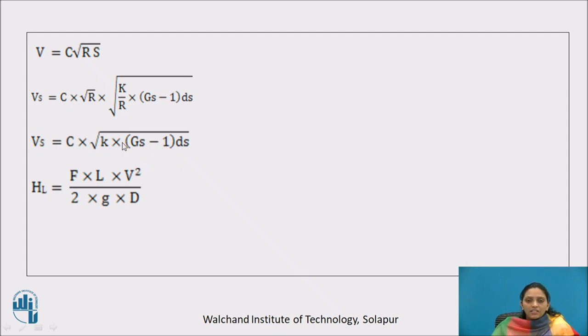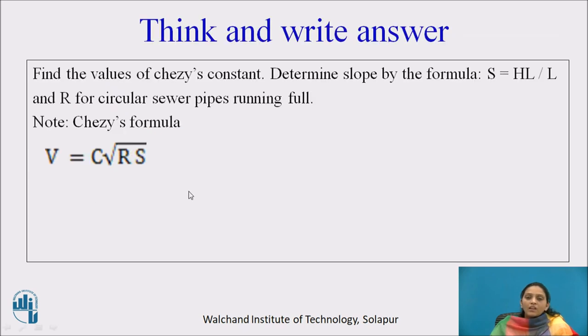Here, in this equation, C is the Chezy constant. We have to determine this Chezy constant. To determine the Chezy constant, use the Darcy-Weisbach head loss formula: F L v square upon 2 G d. Now you pause video here, think and write the answer of this question: Find the values of Chezy constant.